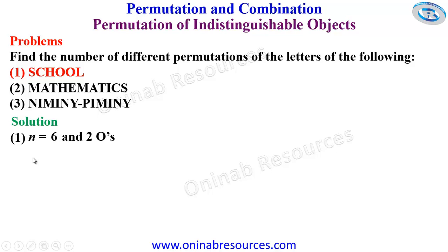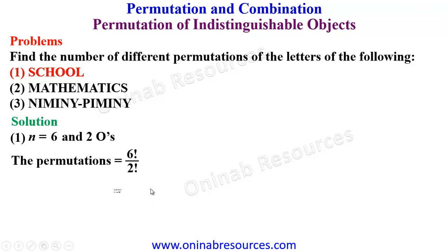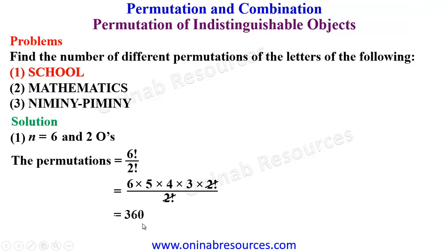So the number of permutations will be equal to 6 factorial over 2 factorial. By expansion, we have 6 times 5 times 4 times 3 times 2 factorial over 2 factorial. The 2 factorials cancel, giving us 360 permutations of the letters of the word school.